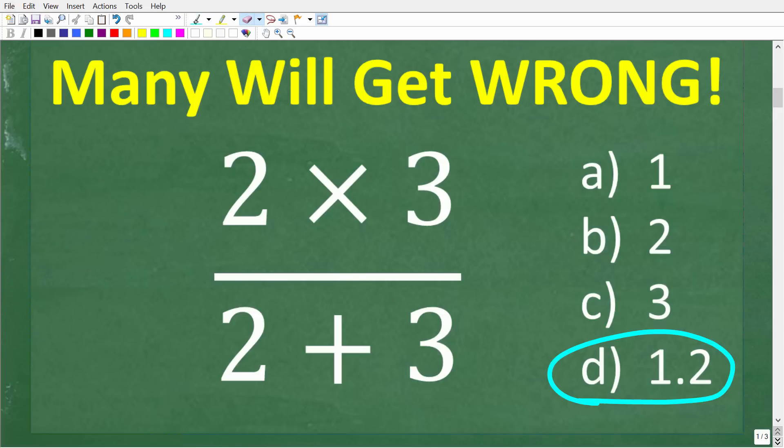Now probably the number one wrong answer here is A which is 1. And the reason why people got this answer is they thought that 2 and 3 up here in the numerator are factors but they also thought maybe that 2 and 3 down here in the denominator are also factors.